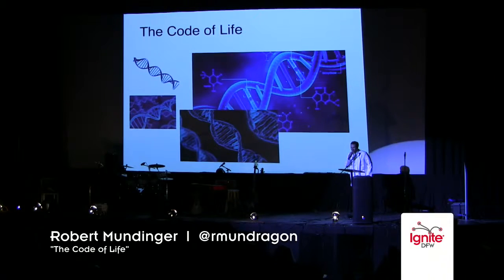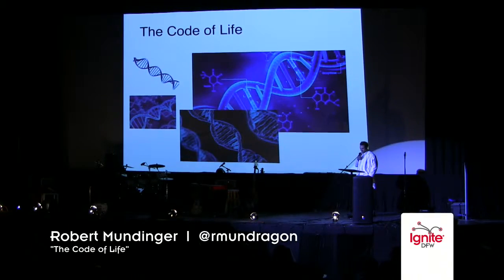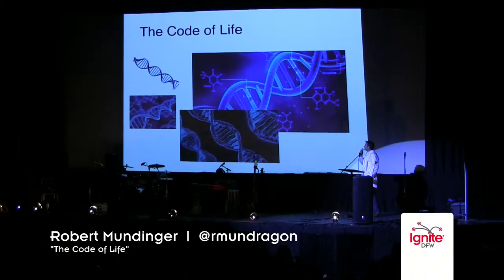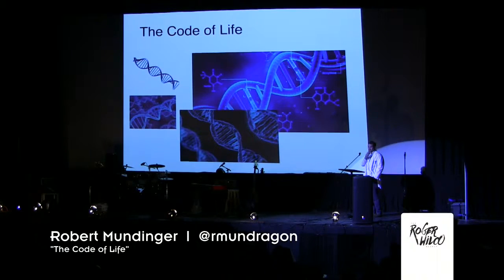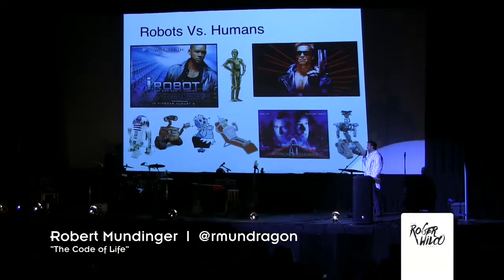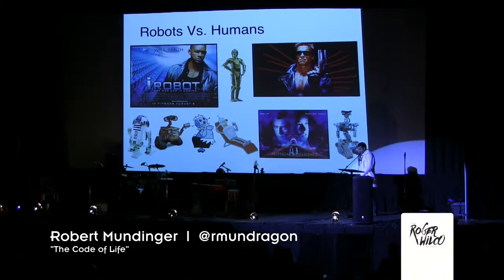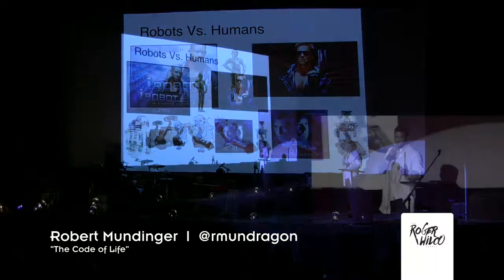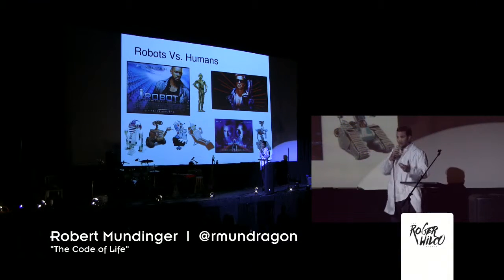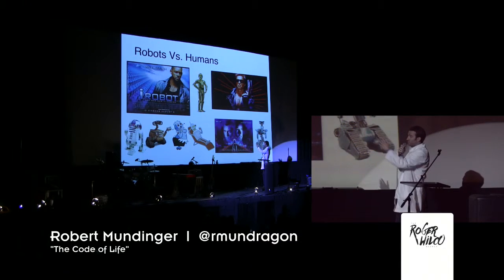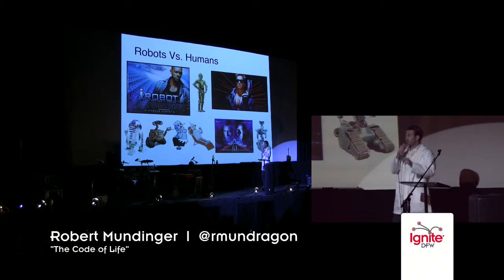We go from partying to coding — life's saddest transition. I'm sorry for that. My talk is called The Code of Life. I wanted to call it The Circle of Life, but that was taken by my nemesis, Elton John. So instead, I'm going to talk about how computers function and how similar that is to how humans function. It's actually kind of creepy when you really dig into it. By the way, iRobot is a terrible movie — I want to save all of you two hours.